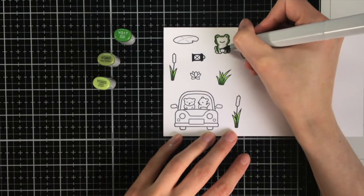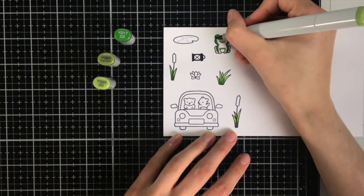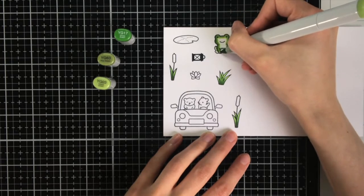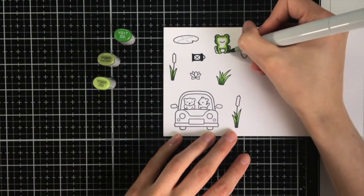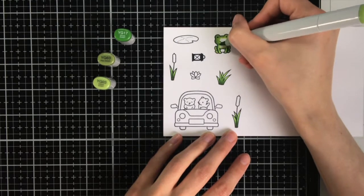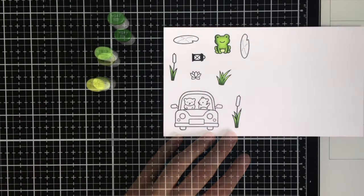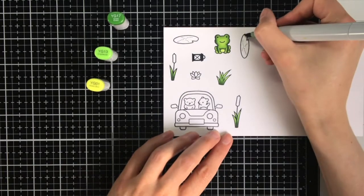So I'm trying to basically create different shades of green. So for instance now for the frog, I am using YG17, YG63 and YG03. And these greens are more muted and also a bit lighter than the ones I use for the grass.